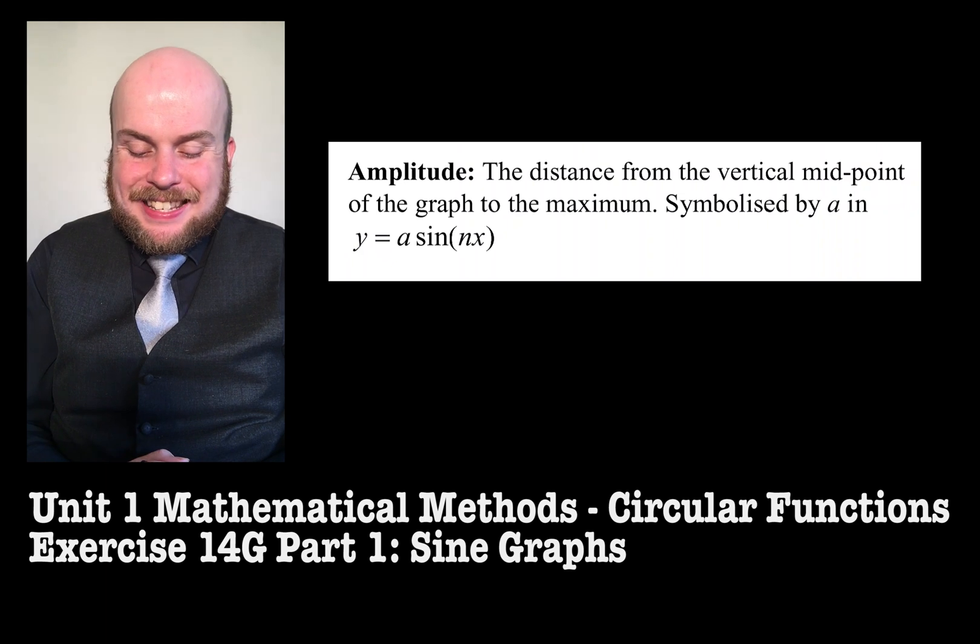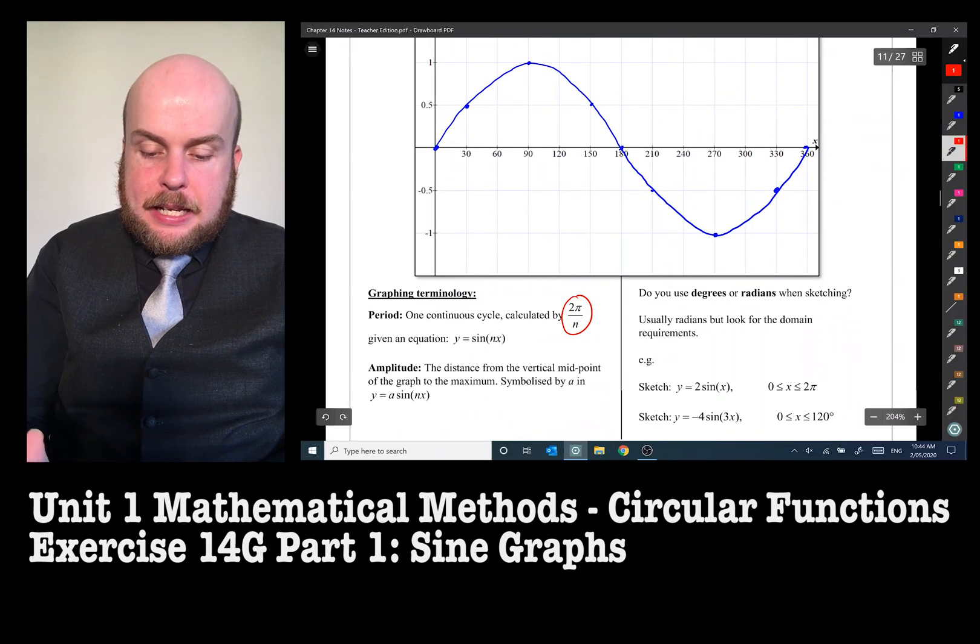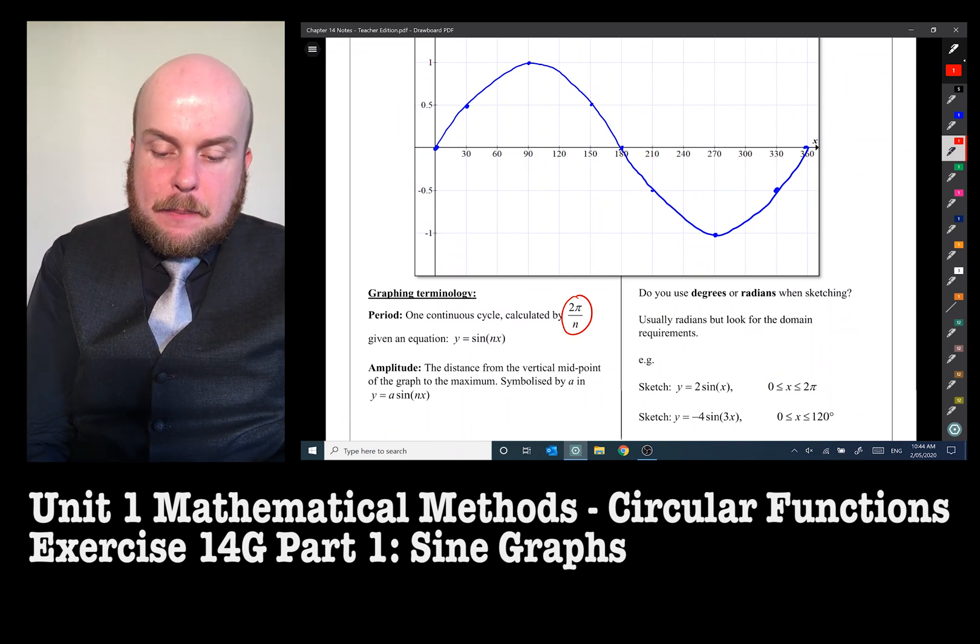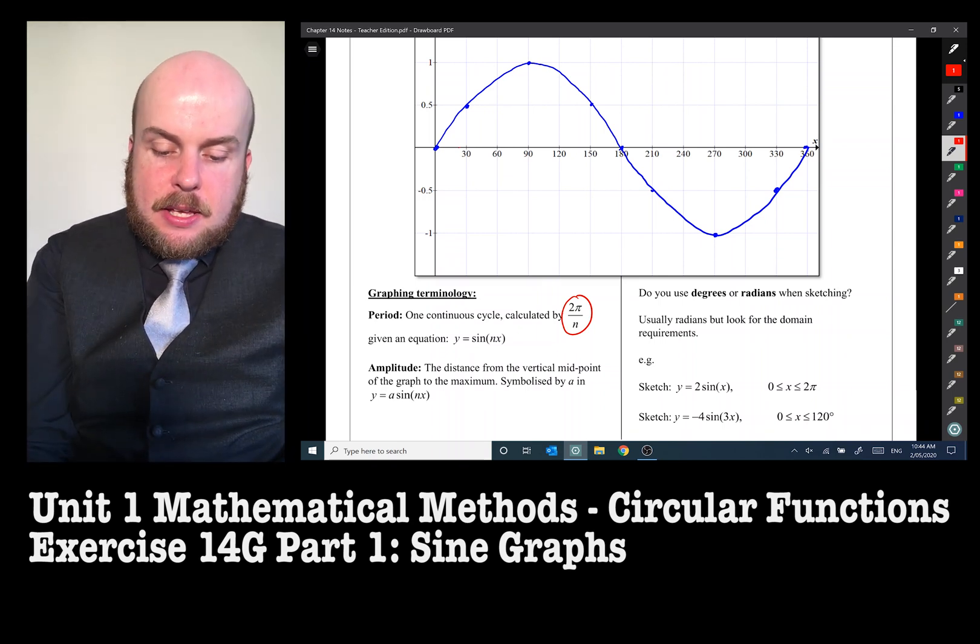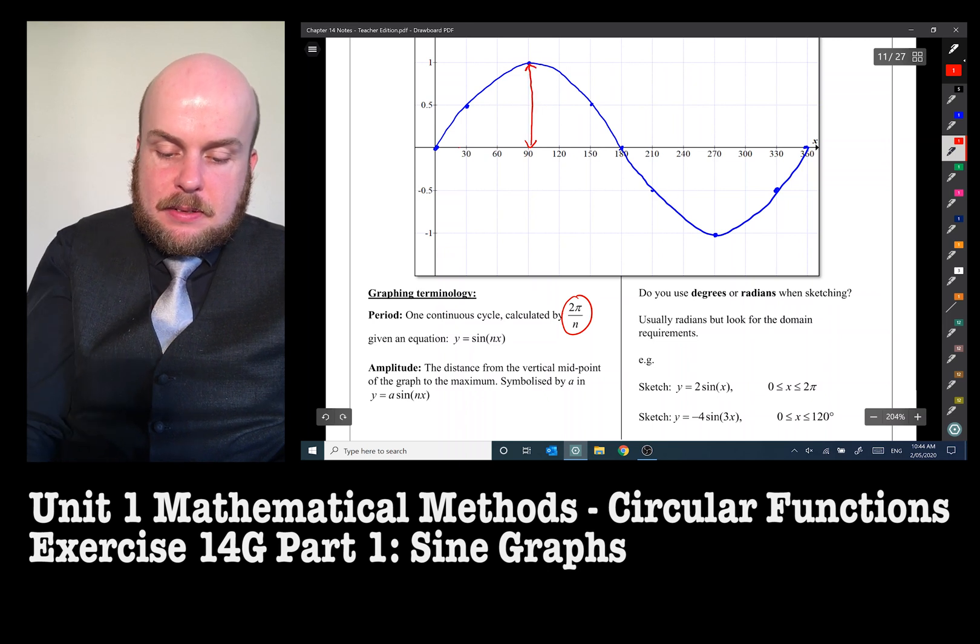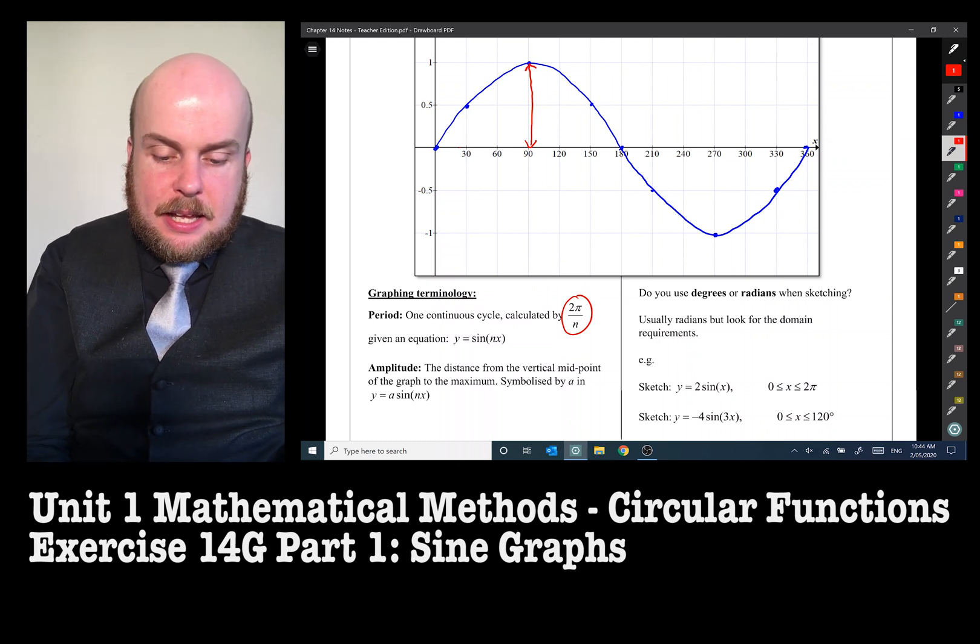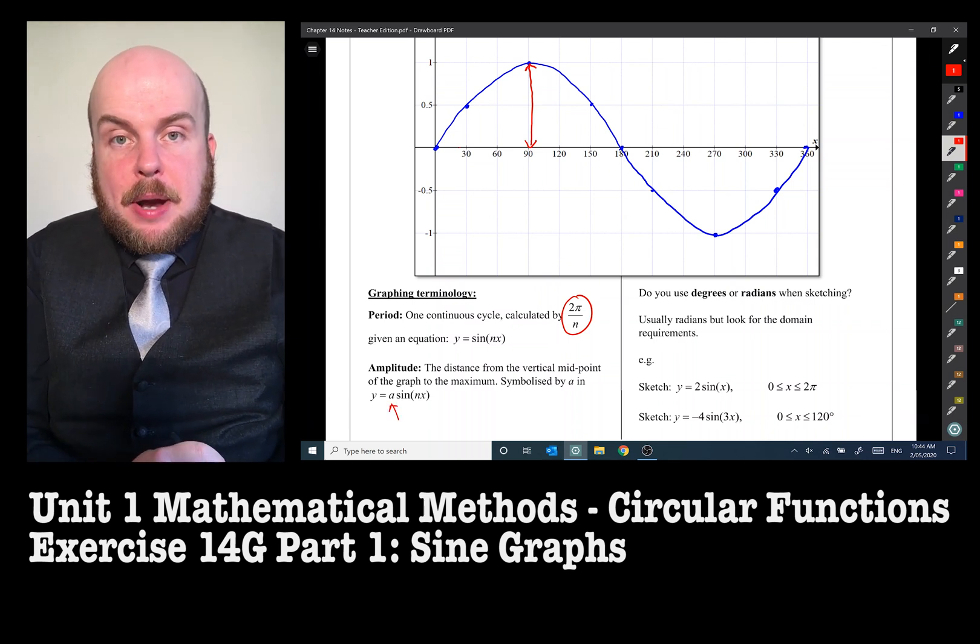The amplitude is the distance from the vertical midpoint of the graph to the maximum, symbolized by a. So what does that mean in plain English? Well, the amplitude, the vertical midpoint, so you can see this graph as it goes up and then down, the vertical midpoint here is the x-axis, that's the middle of the graph there. So the amplitude is simply this distance, and it's also technically speaking the distance down there, but it's that half and half a distance there. And this has an amplitude of 1.